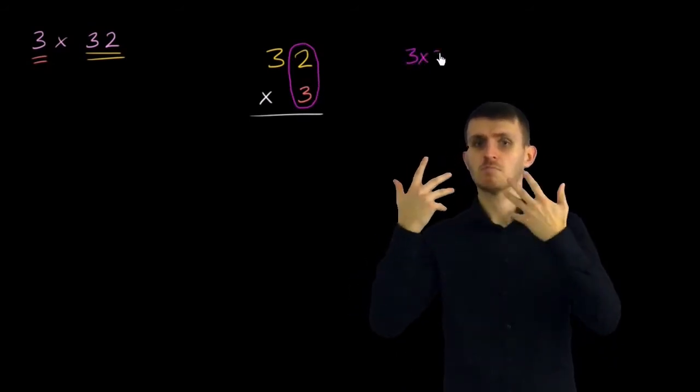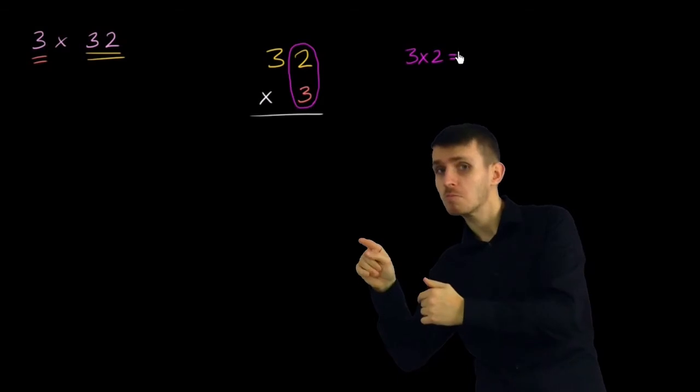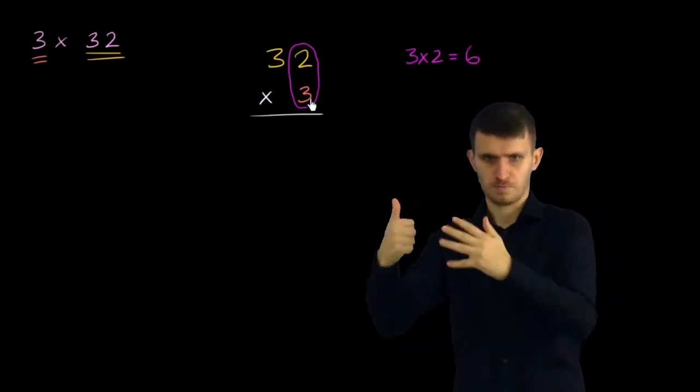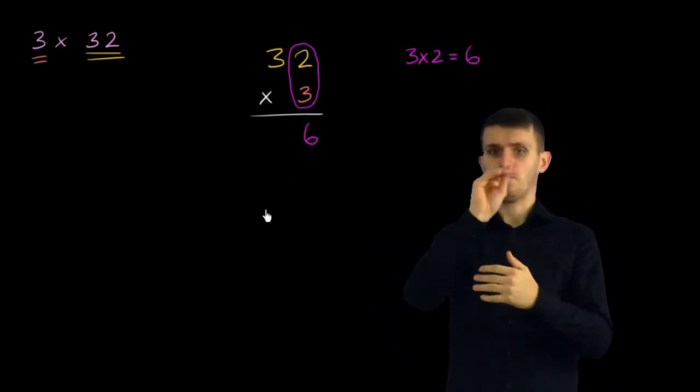Well, 3 times 2 from our multiplication tables, and you can figure it out even if you didn't know your multiplication tables, is 6. So 3 times 2, I'll write 6 right over here in the ones place.